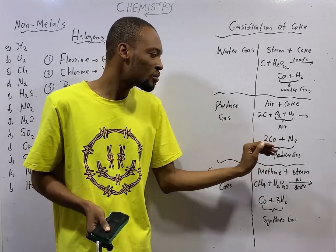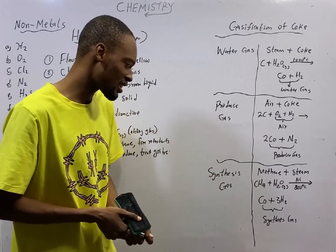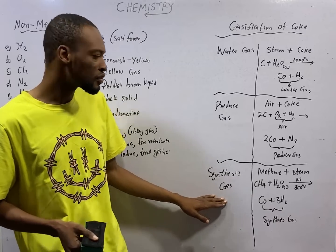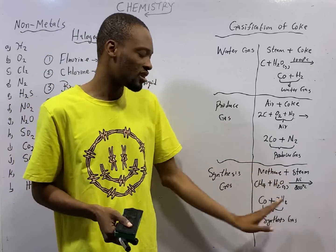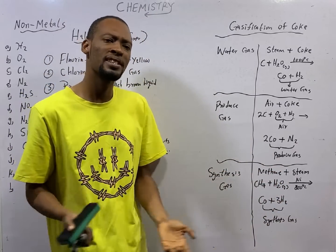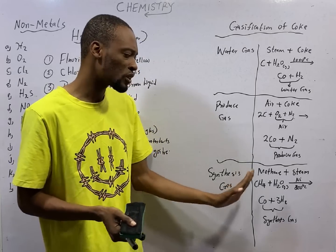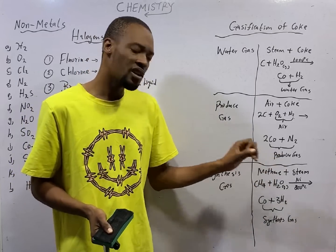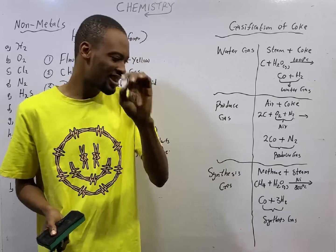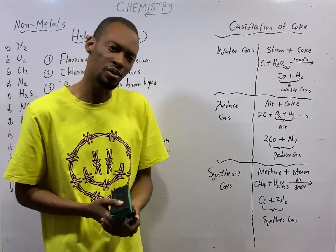If air reacts with carbon, air is oxygen and nitrogen. In air combined to react with carbon, you will get 2CO and N2, that is producer gas. Synthesis gas is gotten from reaction of methane with steam. Methane is CH4, steam is water gas. When they react in the presence of nickel catalyst at 800 degrees Celsius, you will form CO and 3H2, that is synthesis gas.